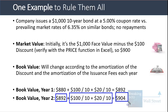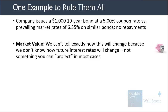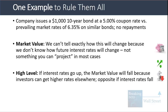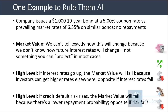With market value, we don't know how it will change because we don't know how future interest rates will evolve. If interest rates go up, the market value will fall because investors can get higher rates elsewhere. If interest rates go down, the market value will increase because this bond looks more appealing by comparison. If credit default risk rises, the market value falls due to lower repayment probability; if repayment probability rises even slightly, the market value should rise.